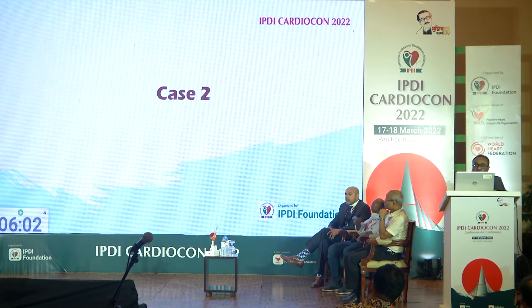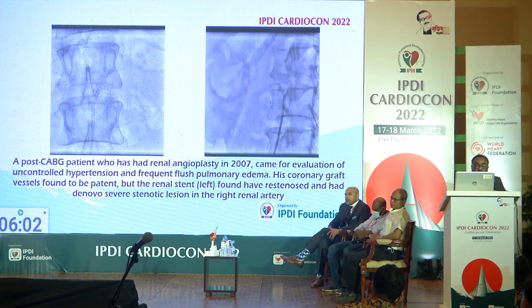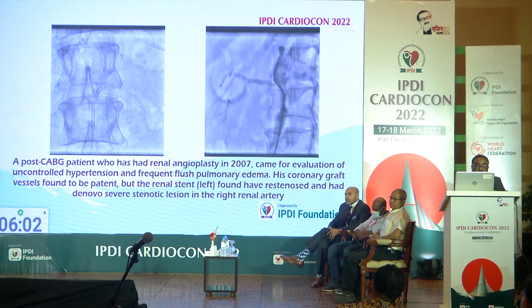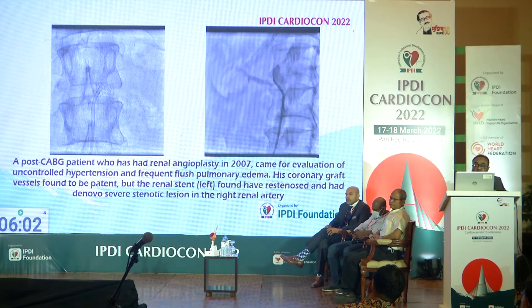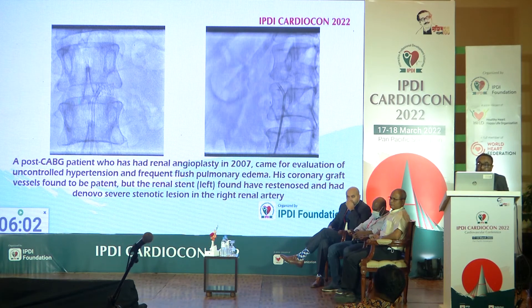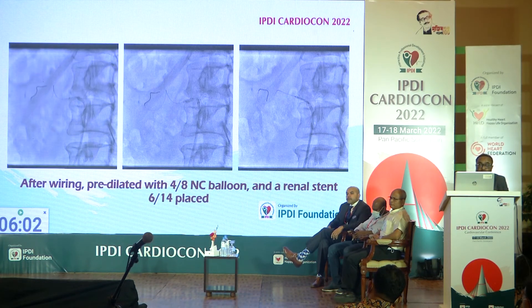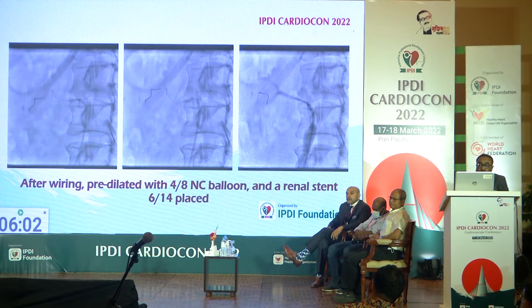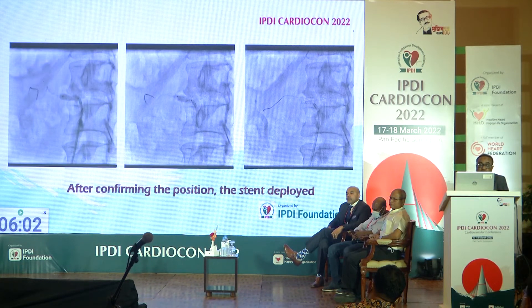Case 2 is an interesting case. A post-CABG patient who had renal angioplasty in 2007 came for evaluation of uncontrolled hypertension and frequent flash pulmonary edema. His coronary graft vessels were found to be patent, but the renal stent had in-stent restenosis, and there was a de novo severe stenotic lesion in the right renal artery. After wiring, pre-dilation was performed and a stent placed; after confirming position, the stent was deployed.